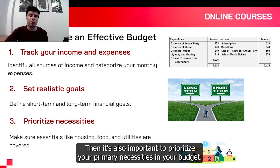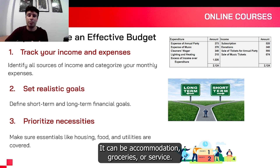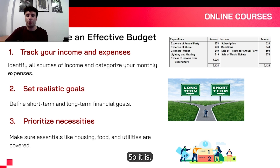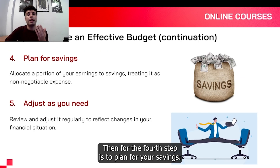Then it's also important to prioritize your primary necessities. In your budget, your primary necessities always need to be prioritized. These can be accommodation, groceries, or utility services. They always need to be covered in your budget.